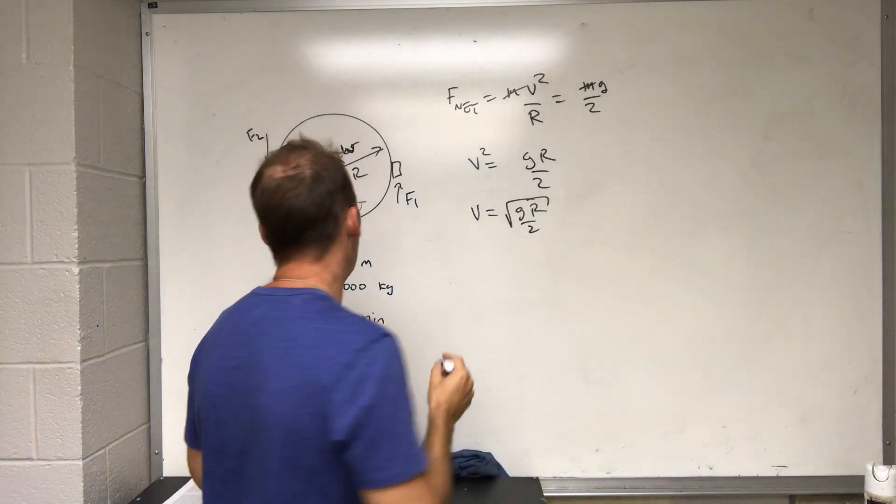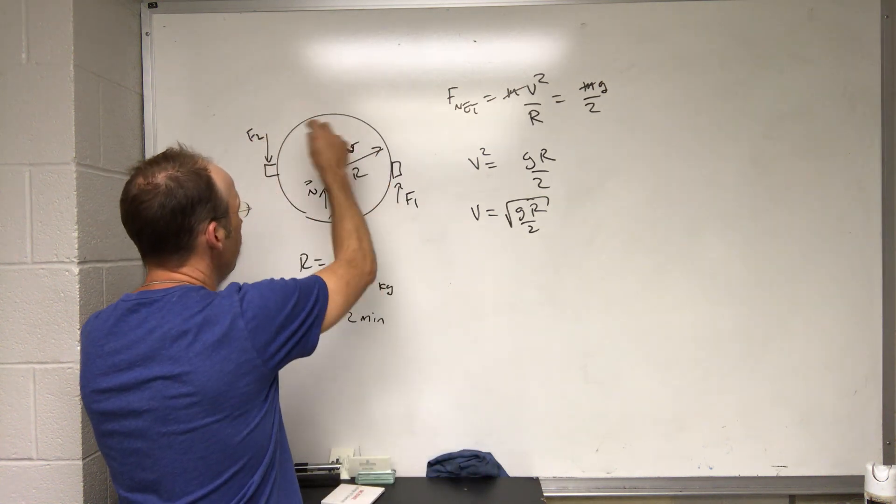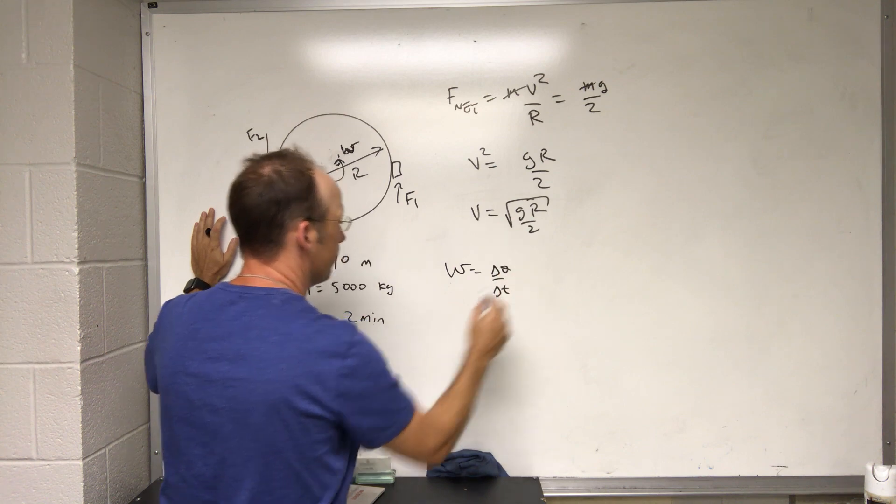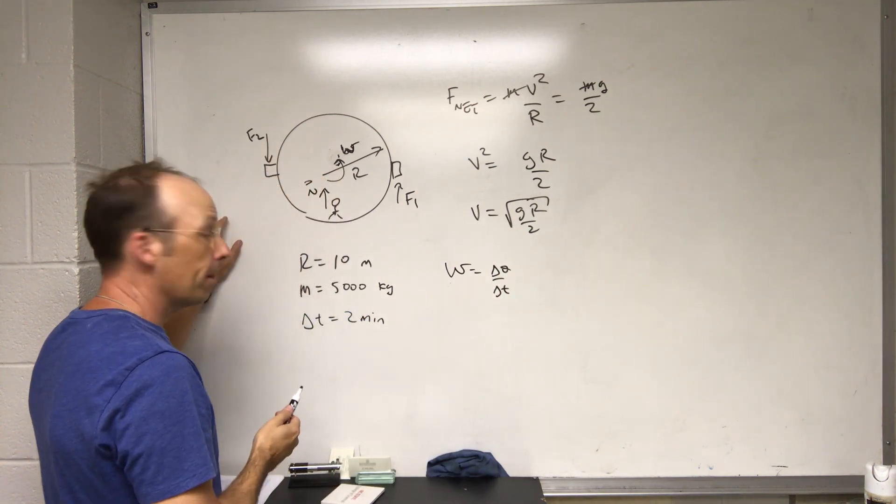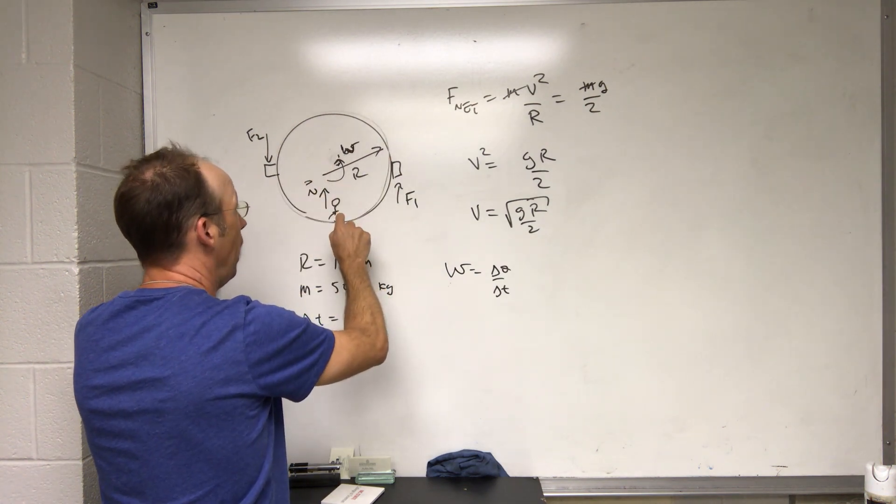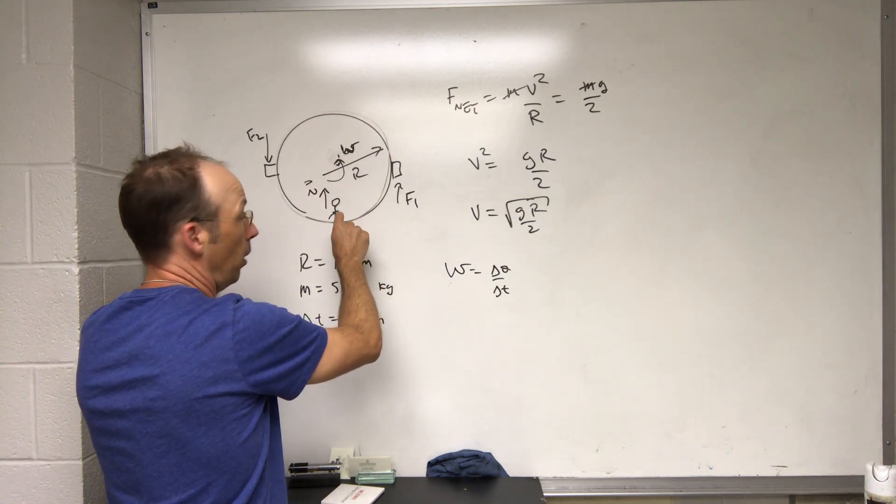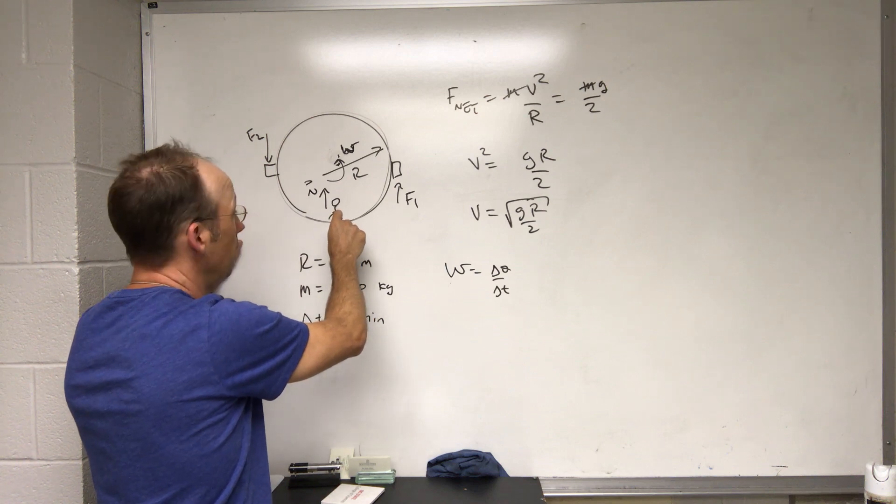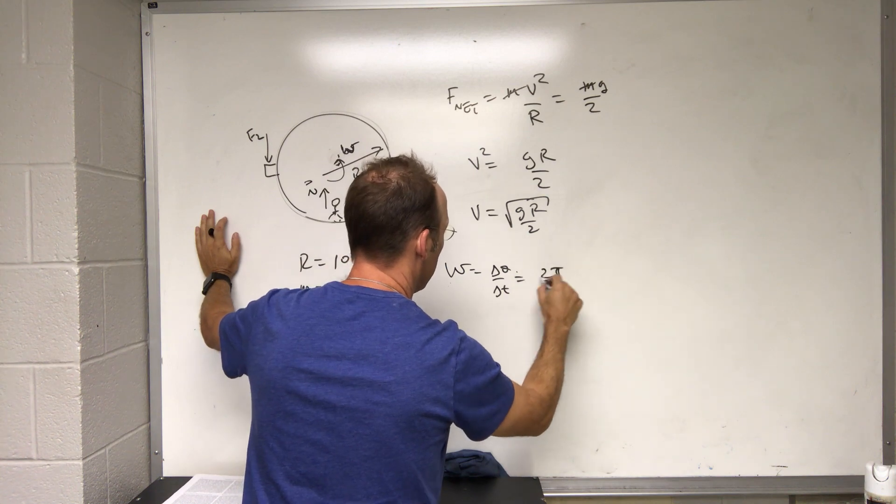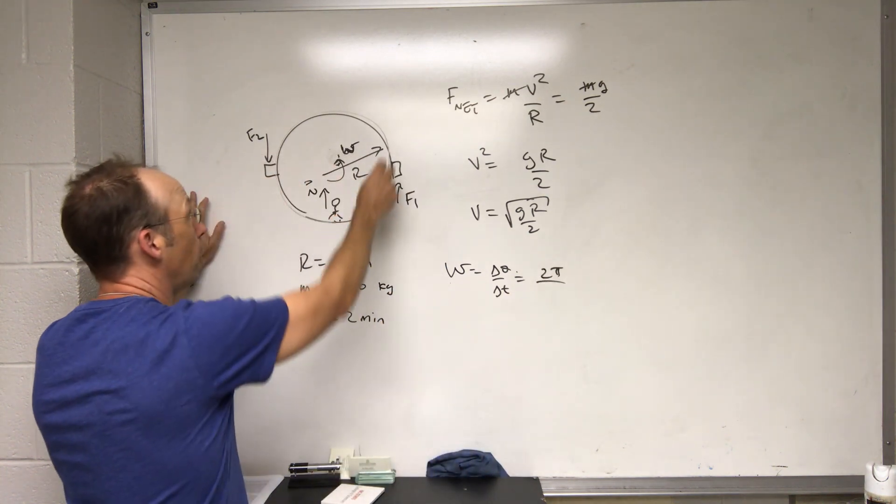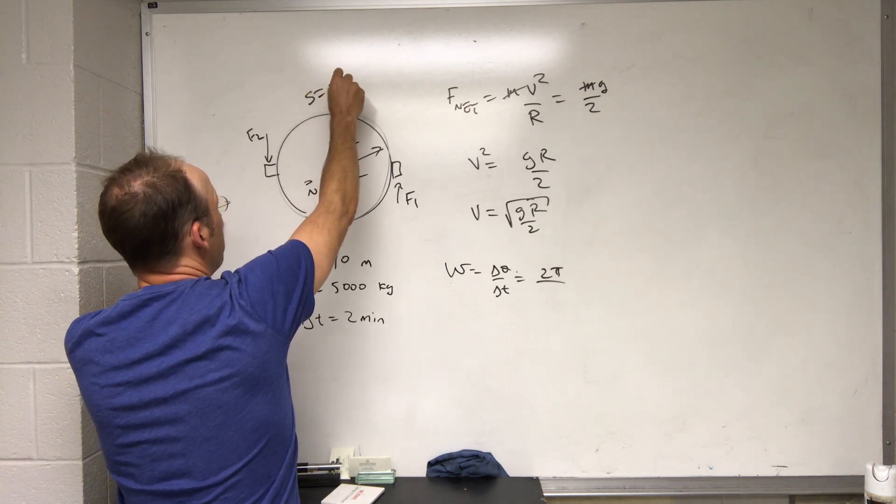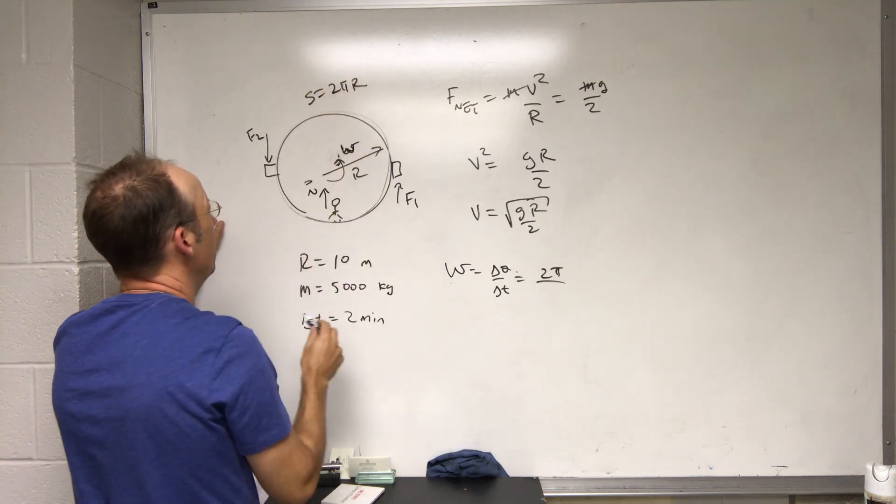Now if I want to find the angular velocity, omega is delta theta over delta t. Well, what if I want to, if I go all the way around, then how far did I go? I went 2 pi radians. But how long did it take me? This is equal to 2 pi divided by the time.